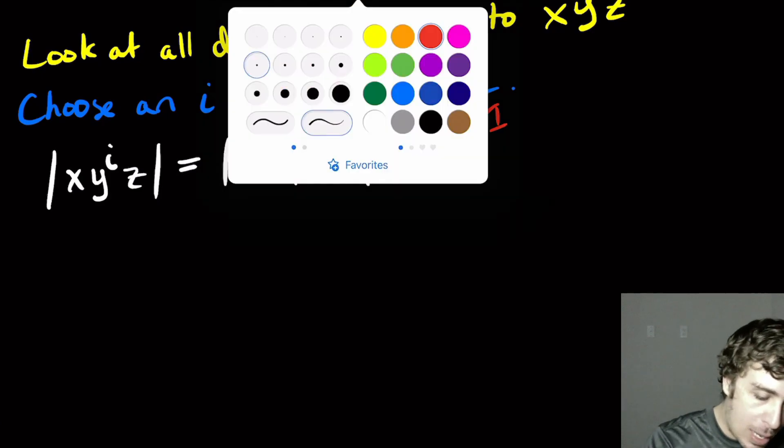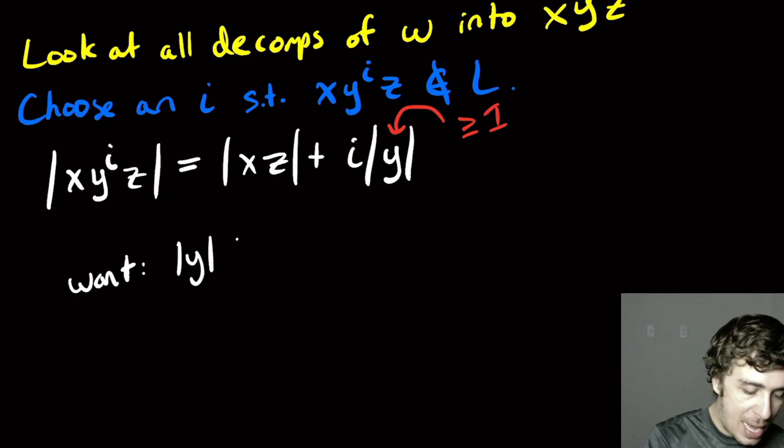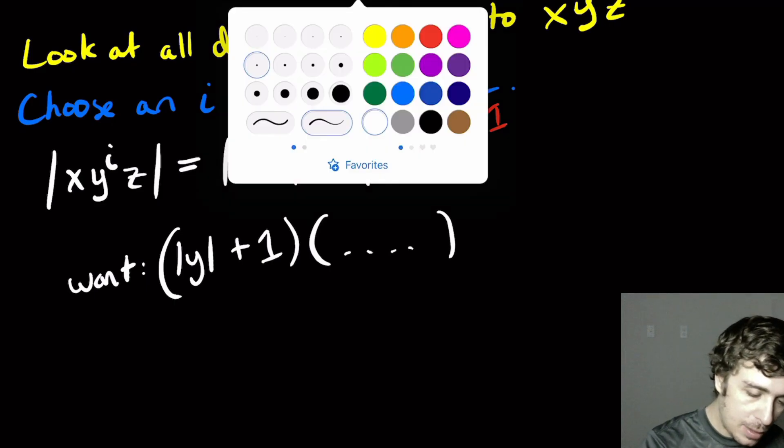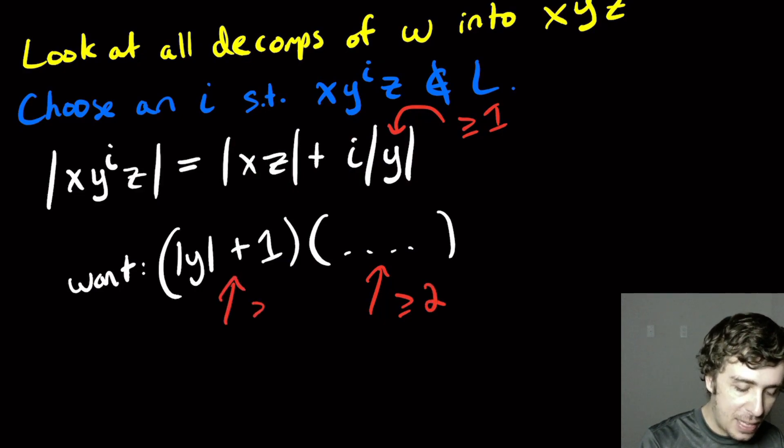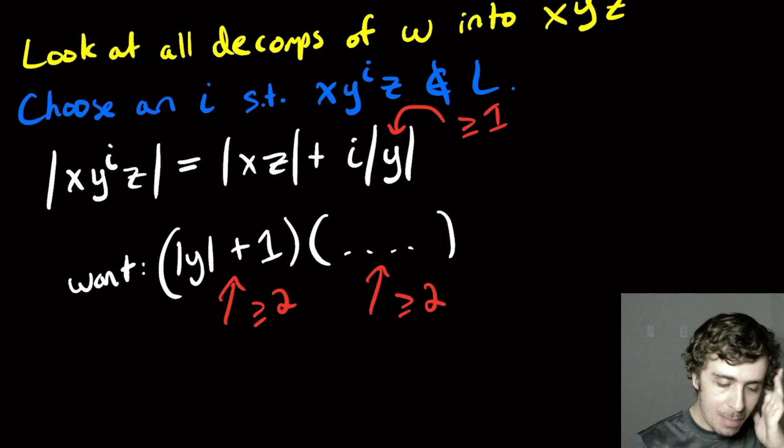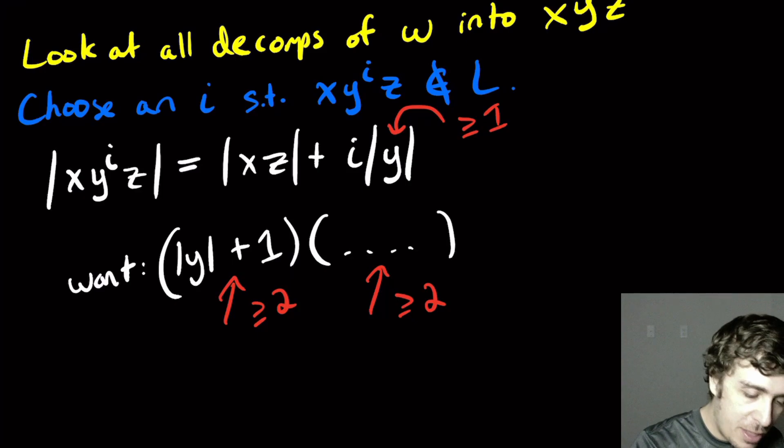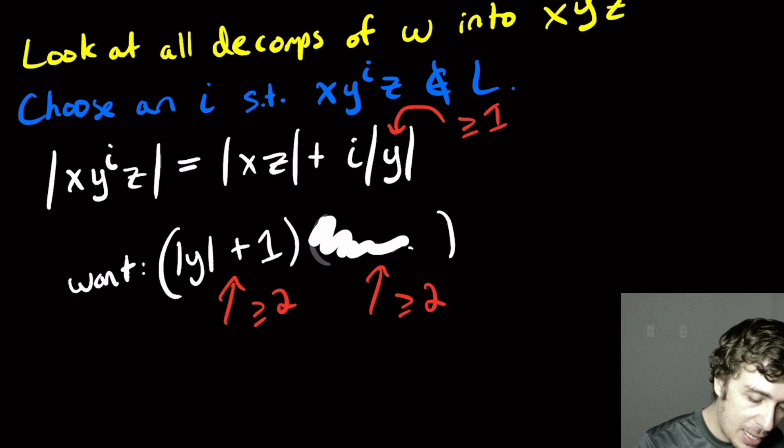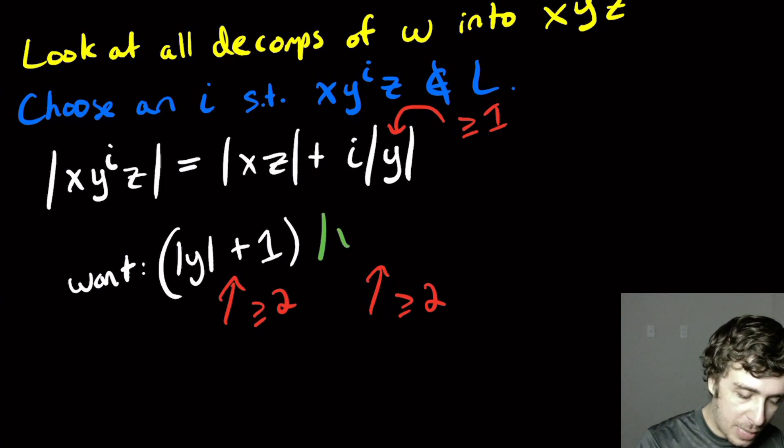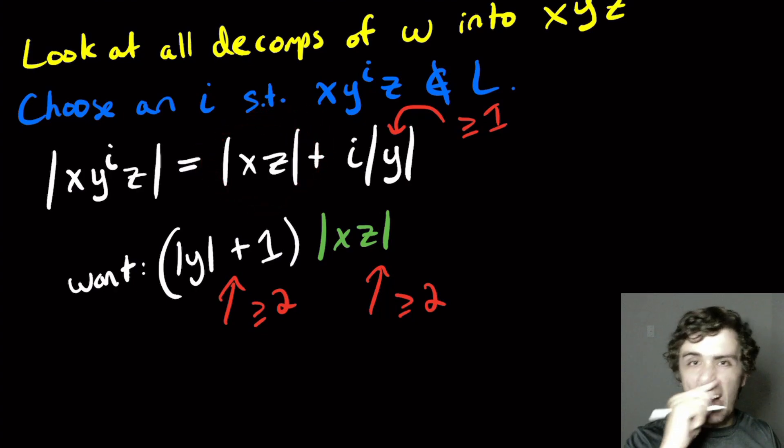So what we want is the length of y plus one times something, and we want that thing to be also at least two. We know that thing to be at least two because we forced it to be. And that's where the plus two from before comes into play, because we can substitute the length of xz here.